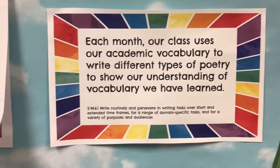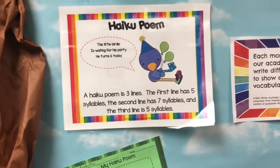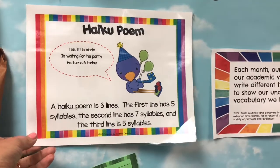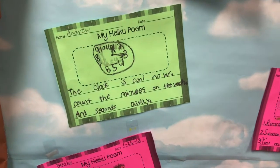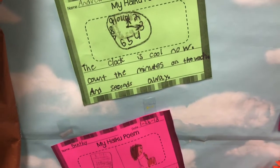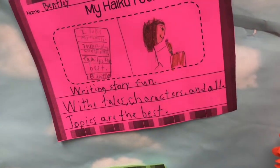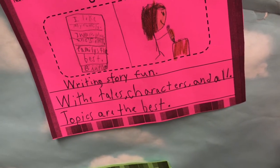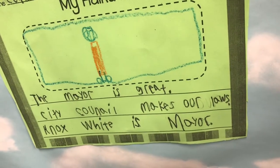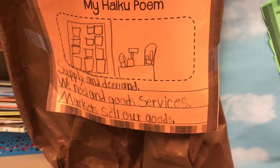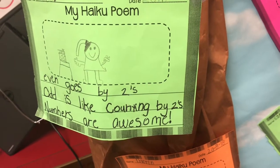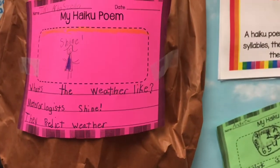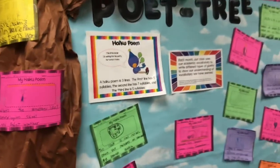I've posted on the bulletin board that each month our class uses academic vocabulary to write different types of poetry to show our understanding. I've also included the standard covered with this activity. With this particular board we worked on haiku poems — I've also done diamantes and acrostics. One student did math, another used academic vocabulary from writing using the words 'tales' and 'characters,' another wrote about social studies — the mayor — and another about supply and demand.